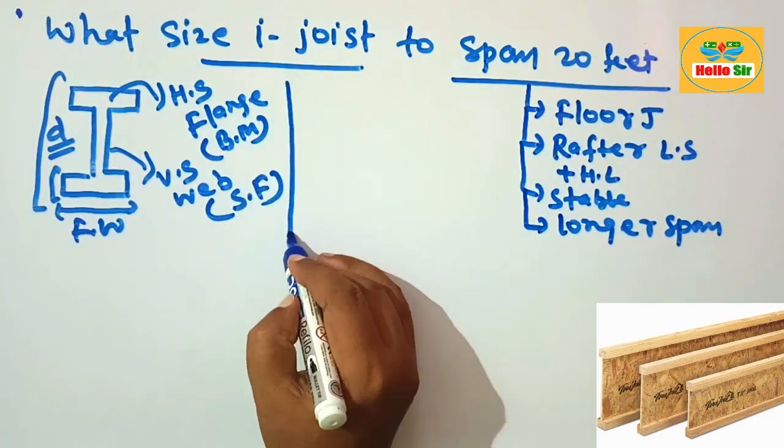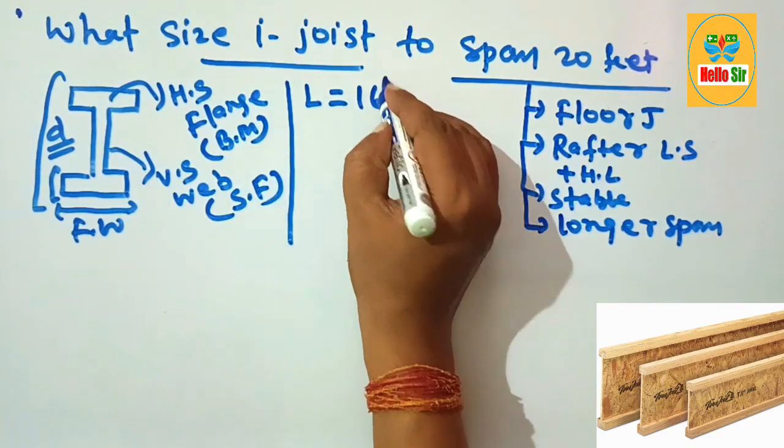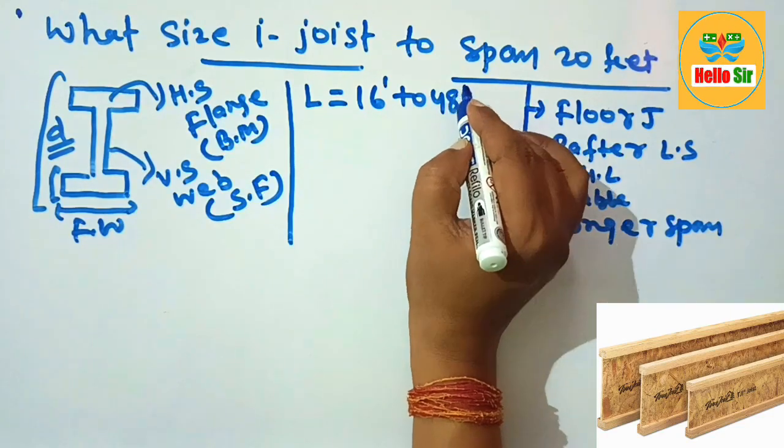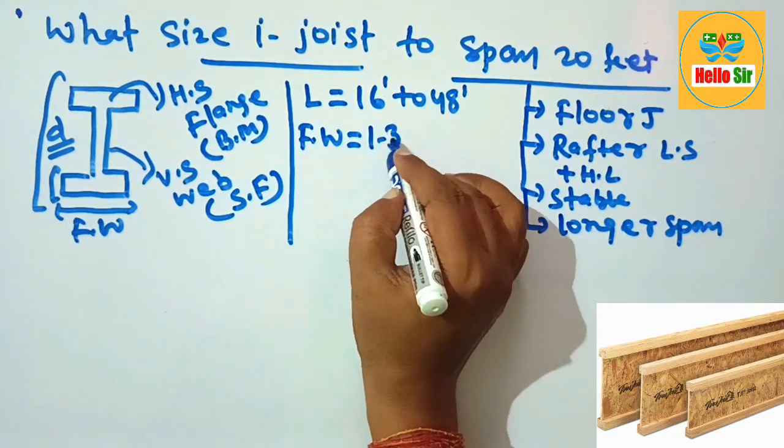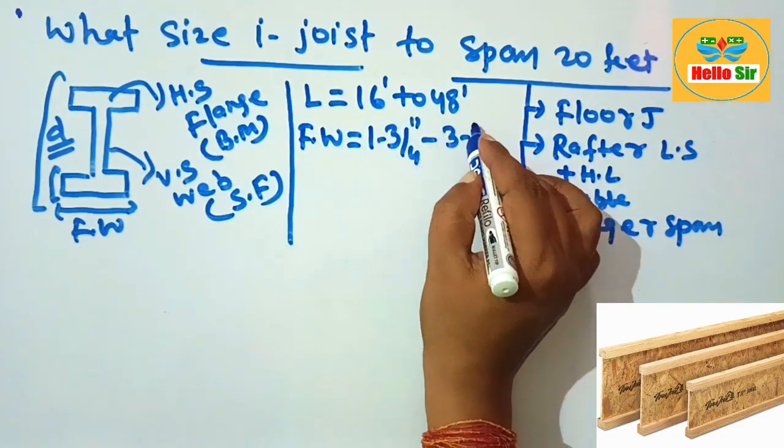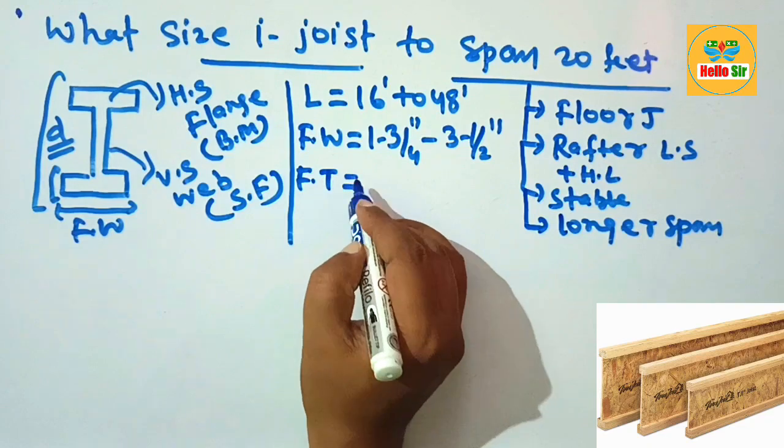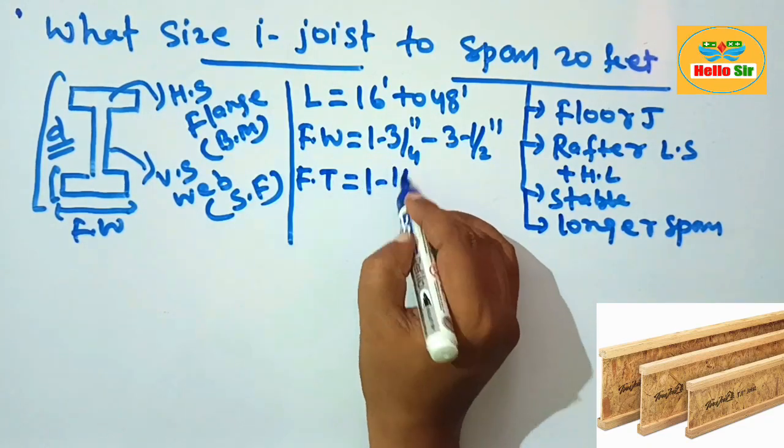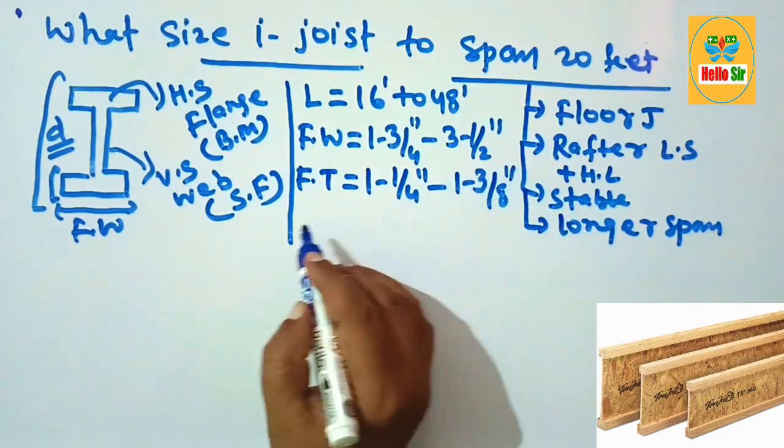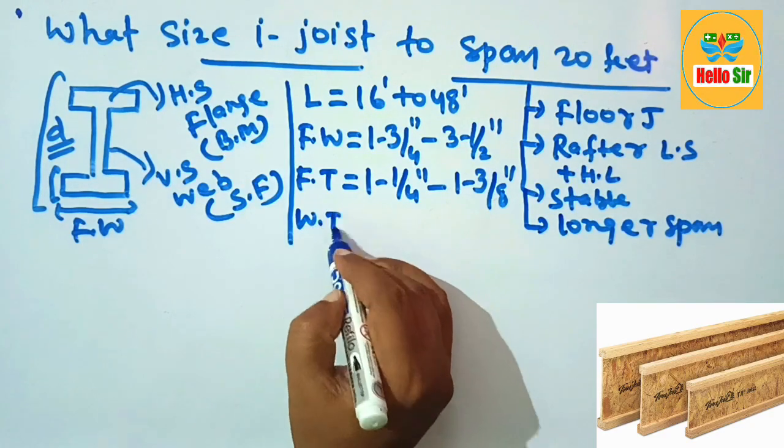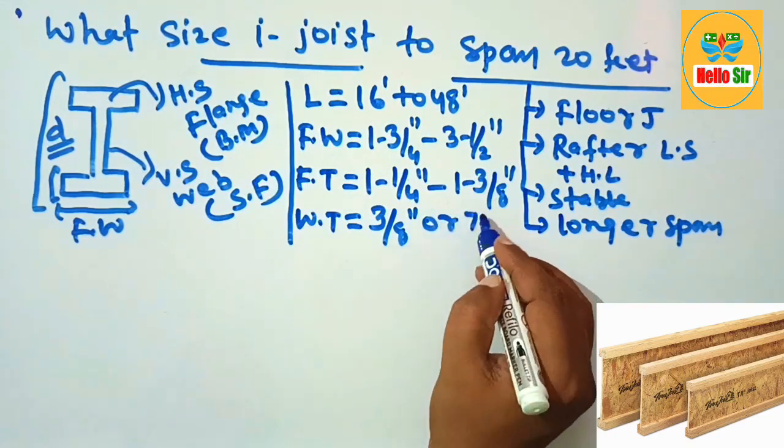Now let's understand the dimensions. I-joists come in lengths from 16 feet to 48 feet. The flange width ranges between 1 and 3/4 inches to 3 and 1/2 inches. The flange thickness ranges between 1 and 1/4 inches to 1 and 3/8 inches. The web thickness is either 3/8 inch or 7/16 inch.